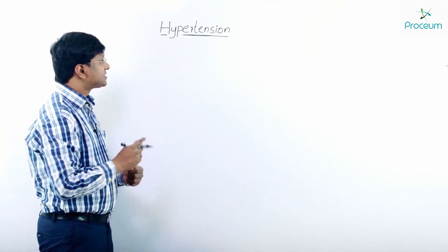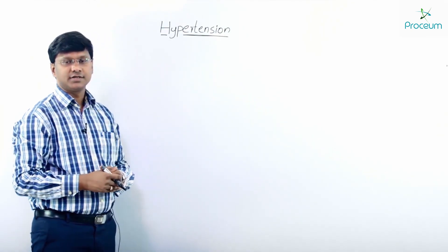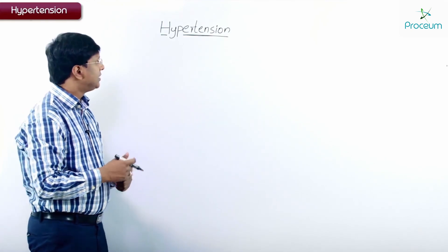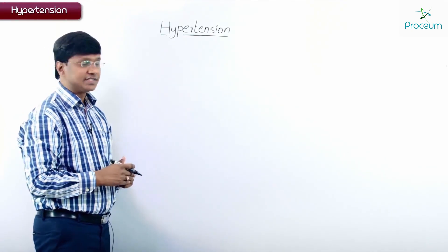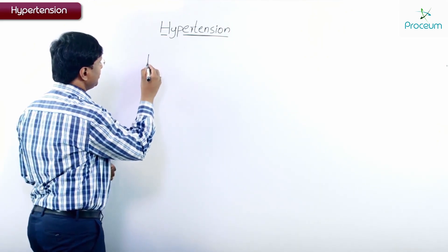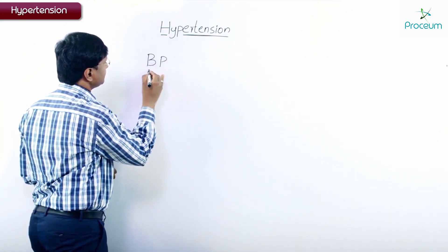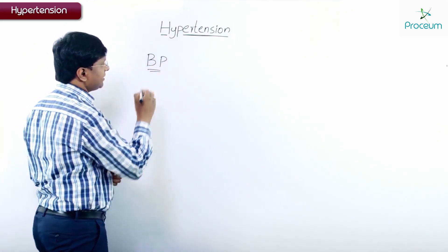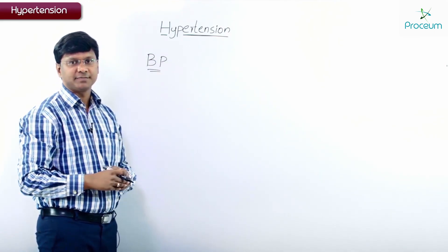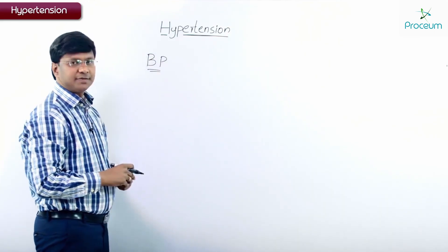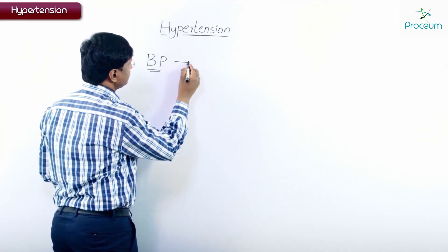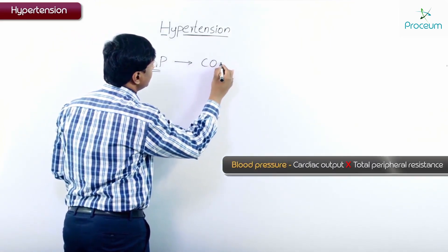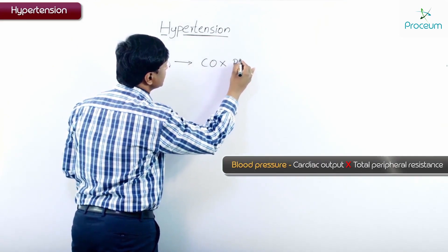Let me discuss the drugs which are used in the treatment of hypertension. Before going into hypertension, let me discuss what exactly you mean by blood pressure. Blood pressure is given by the formula: cardiac output into peripheral resistance.